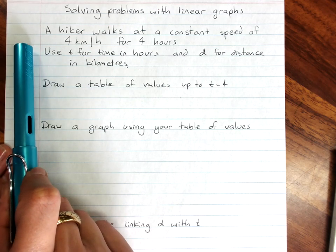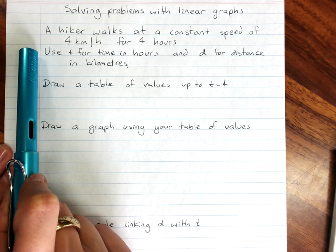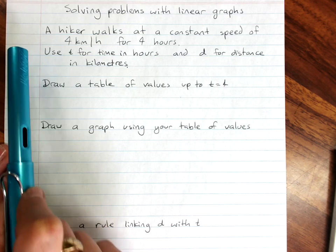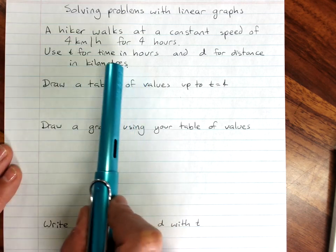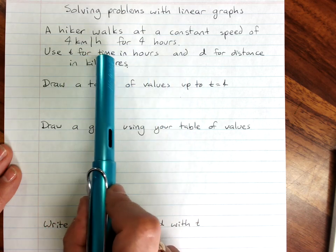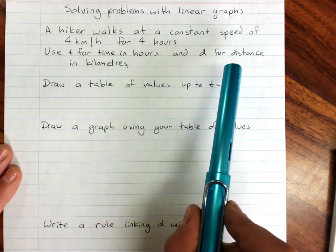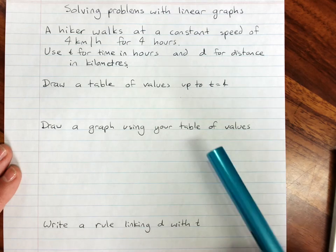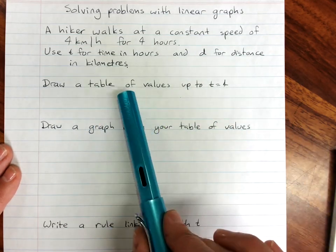So the first one, a hiker walks at a constant speed of 4 km per hour for 4 hours. Now they're telling us what to use for the letters in our rule. They've said use t for time in hours and d for distance in kilometers.